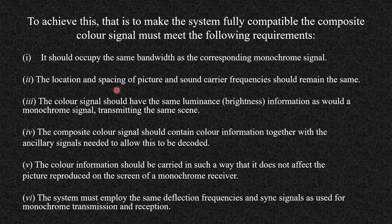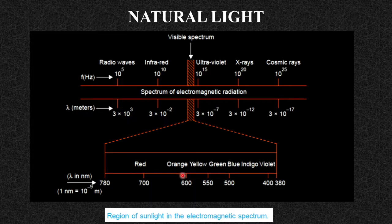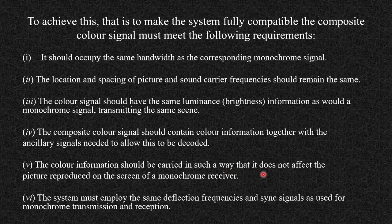To achieve this compatibility, the black and white and color television must occupy the same bandwidth as the corresponding monochrome signal. The location and spacing of the picture and sound carrier frequency should remain the same. The color signal should have the same luminance — that is brightness information — as a monochrome signal transmitting the same scene. The composite color signal should contain color information together with ancillary signals needed to allow decoding, and the color information should not affect reproduction on a monochrome receiver screen. The system must employ the same deflection frequencies and sync signals as used for monochrome transmission and reception.